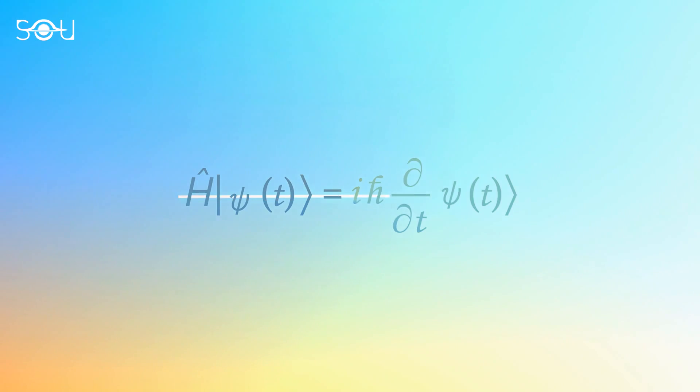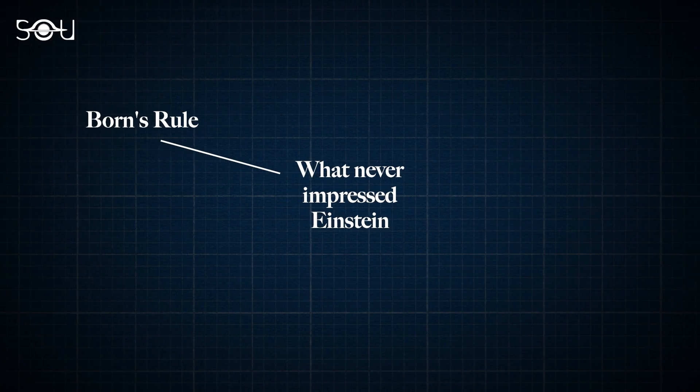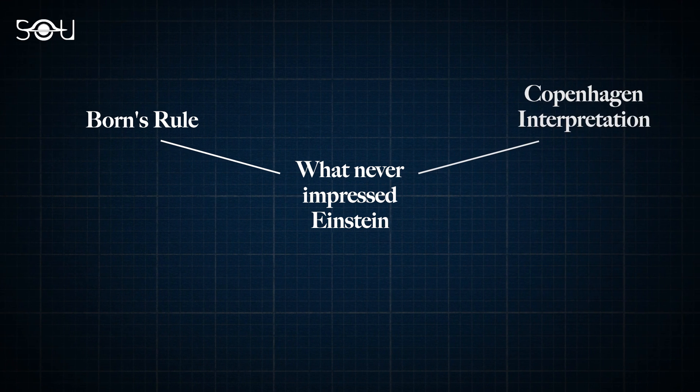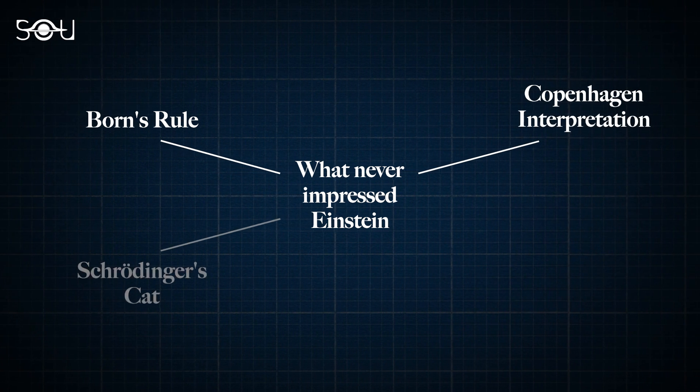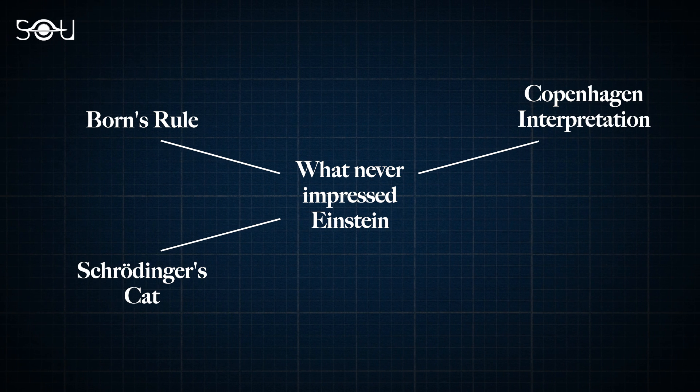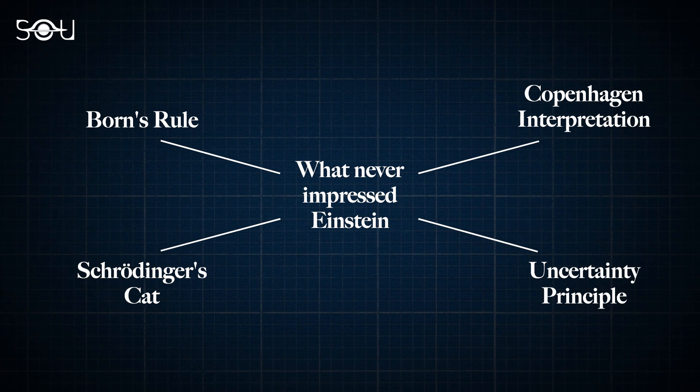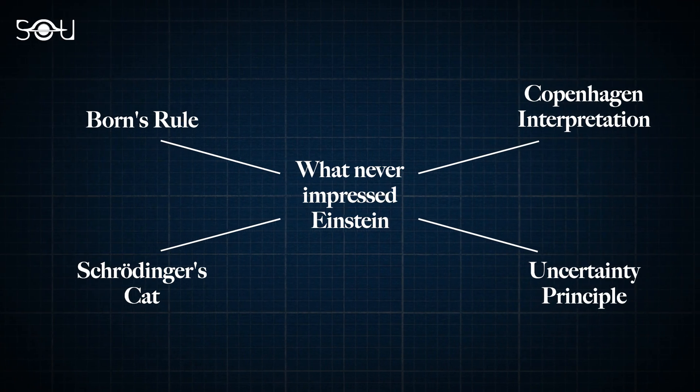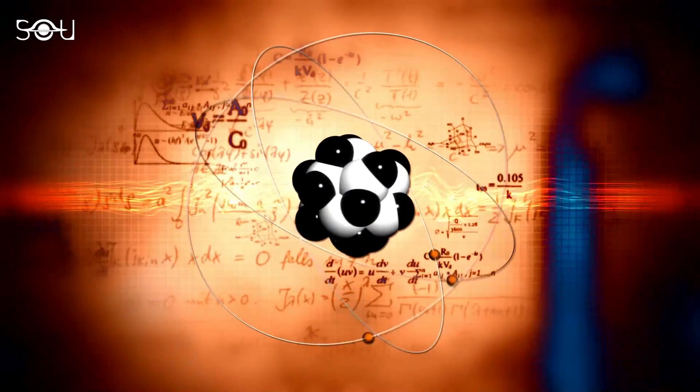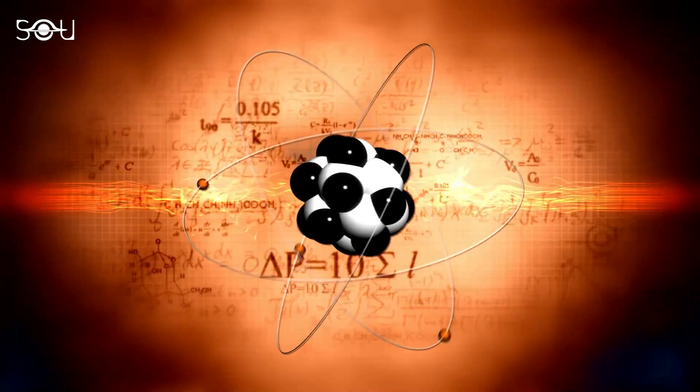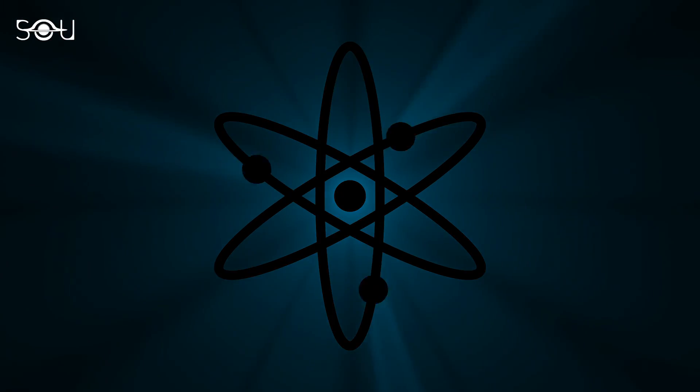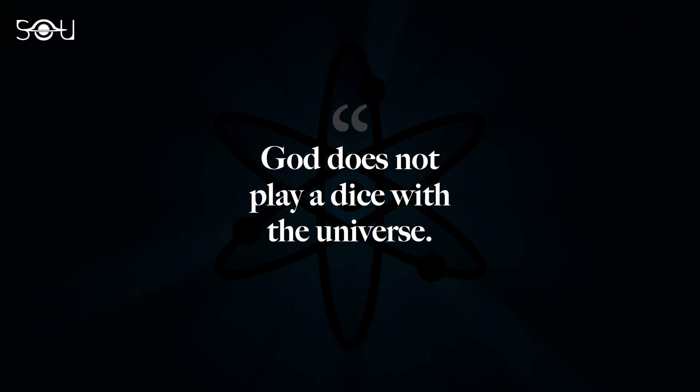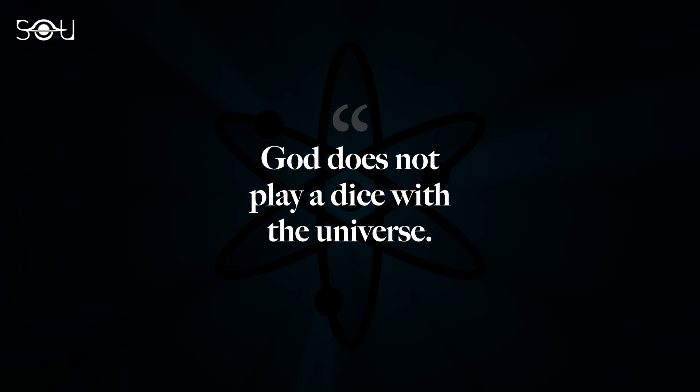But Einstein was never convinced by the new quantum theory. Ideas like Born's rule of probabilistic interpretation of a quantum system, Bohr and Heisenberg's Copenhagen interpretation, Schrödinger's cat thought experiment, and the uncertainty principle made quantum mechanics look weird. He was never impressed by these principles of the new quantum theory and said that there could be a better way to work around the subatomic world. In a letter to Max Born, he once wrote, 'God does not play dice with the universe,' implying his refusal of the randomness offered by quantum mechanics.